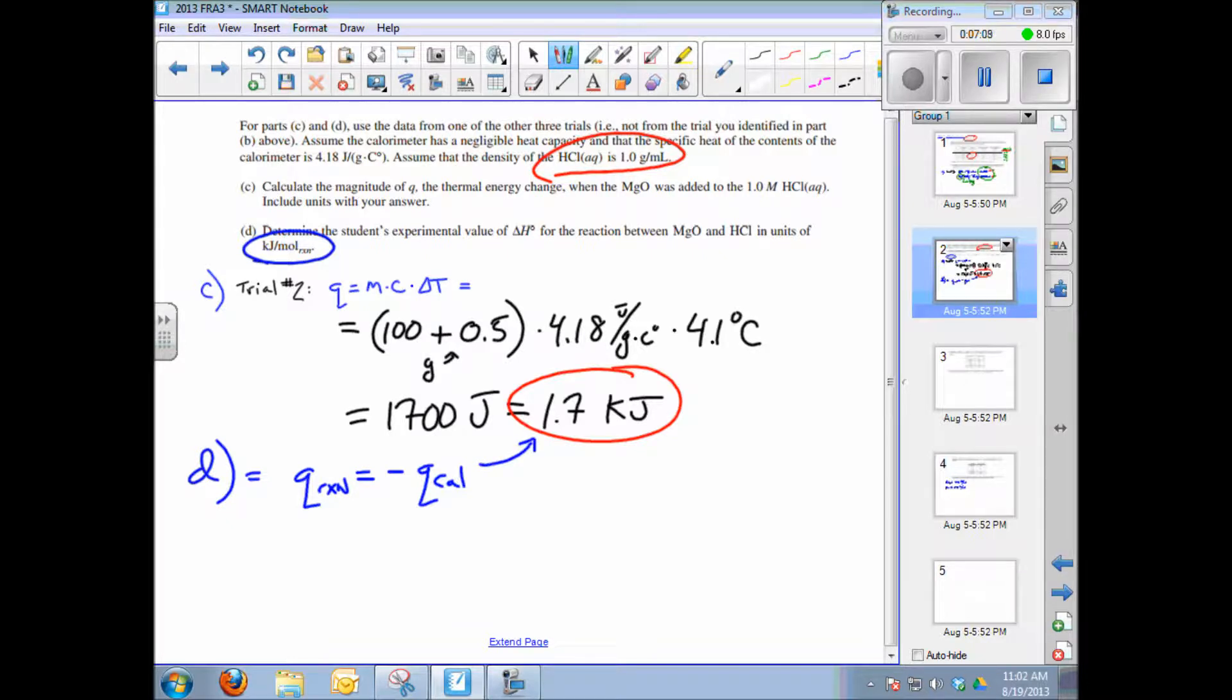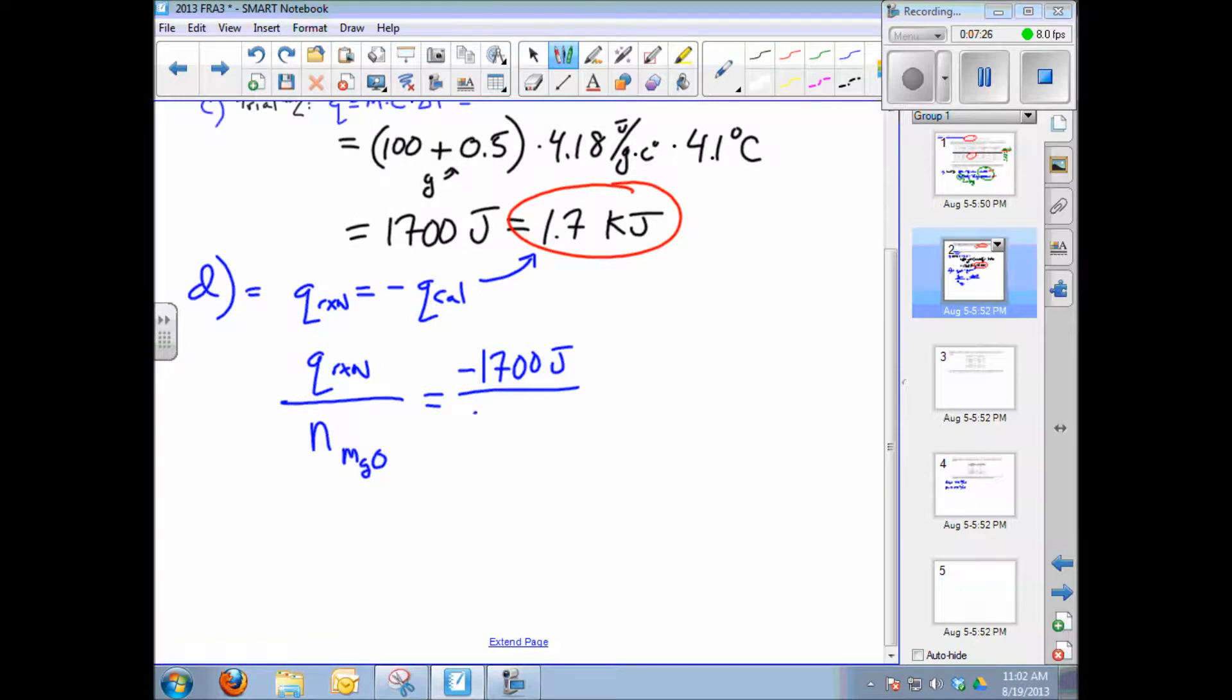Q of the reaction is 1.7 kilojoules or 1700 joules. So how many moles? We're essentially calculating delta H, which is Q of the reaction over number of moles. Let's use the number of moles of magnesium oxide. Calculating that, you get negative 140 kilojoules per mole of magnesium oxide.